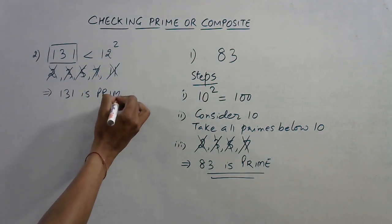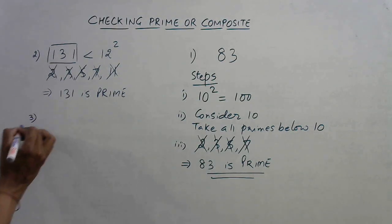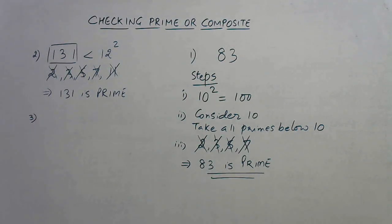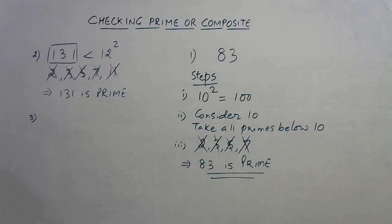Likewise, you can go on and on, take some more examples and find out whether a number is prime or not. Let's take the example of a number now which is not prime. Suppose we have the example of... okay, let me consider a number which is divisible by a particular number and we will try and find out whether it is a prime number or not.